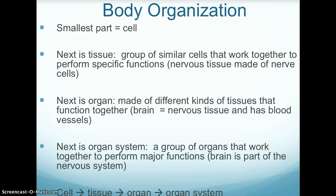Organs are followed by the largest and most complex component: organ systems. An organ system is a group of organs that work together to perform major functions. For example, the brain is part of the nervous system.